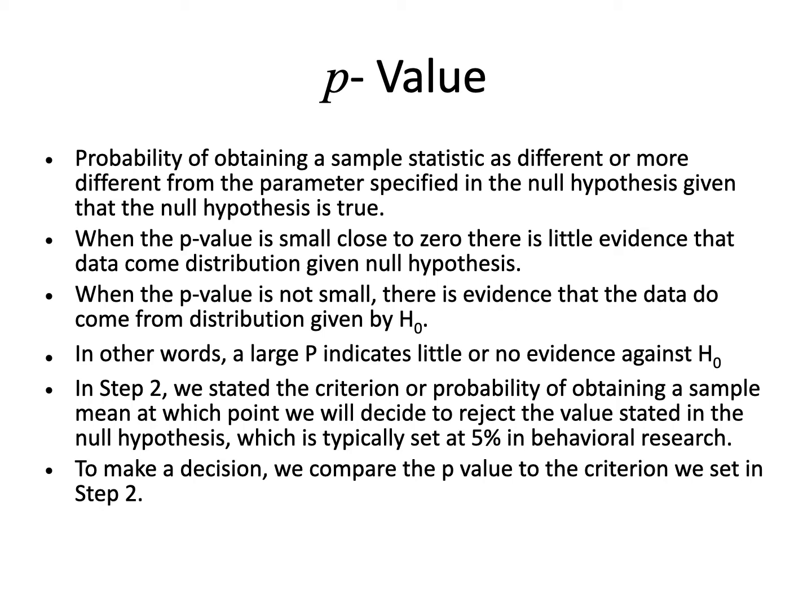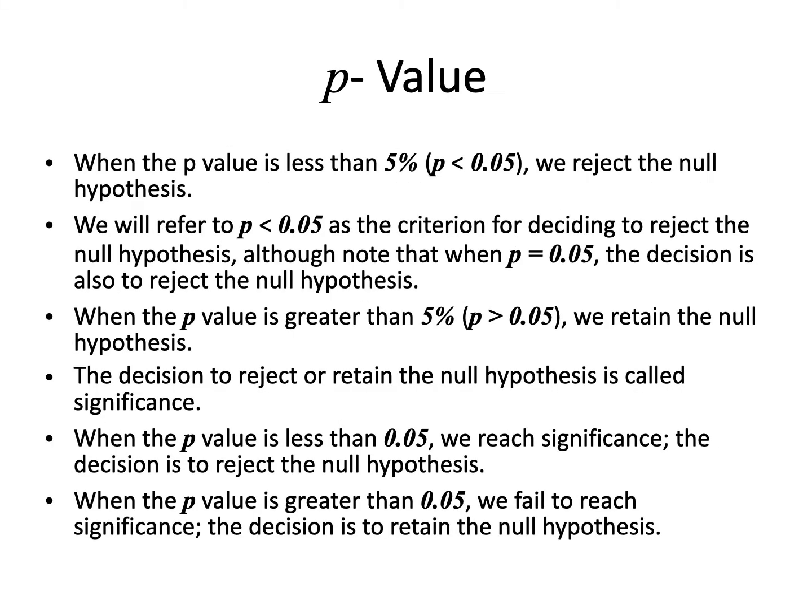In step 2, we stated the criterion — the probability of obtaining a sample mean at which point we decide to reject the value stated in the null hypothesis — typically set at 5% or 1% in behavioral research. To make the decision, we compare the p-value to the criterion set in step 2. We get this p-value from the standard table corresponding to the z-value. When the p-value is less than 5% (p < 0.05), we reject the null hypothesis. We refer to p < 0.05 as the criterion for deciding to reject the null hypothesis.